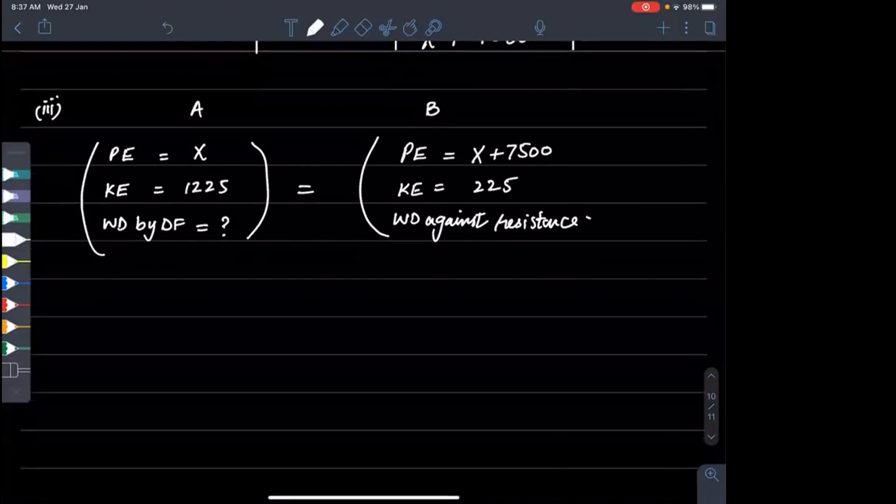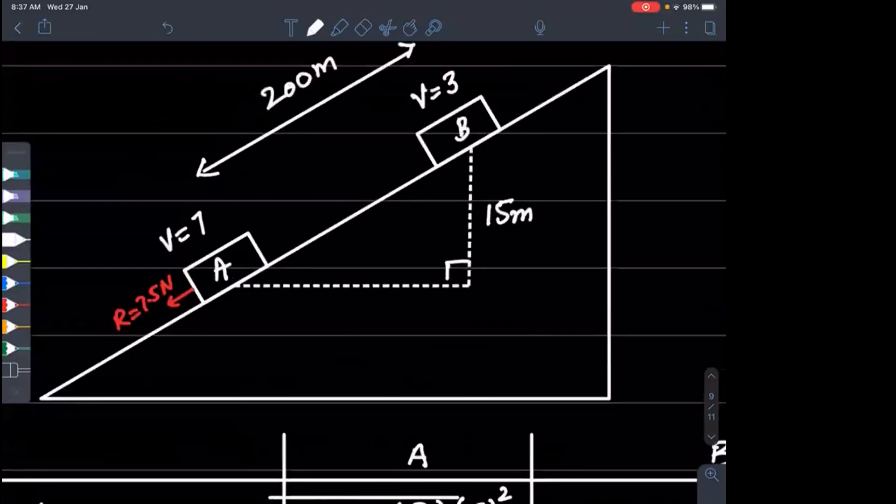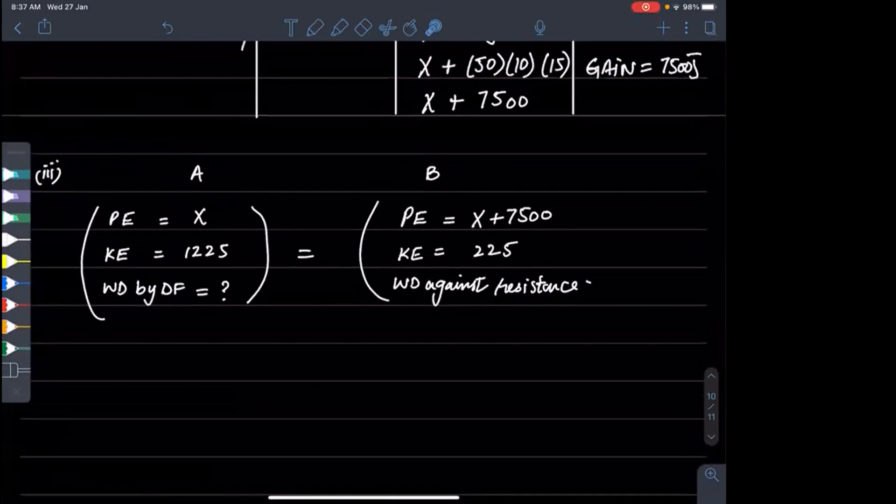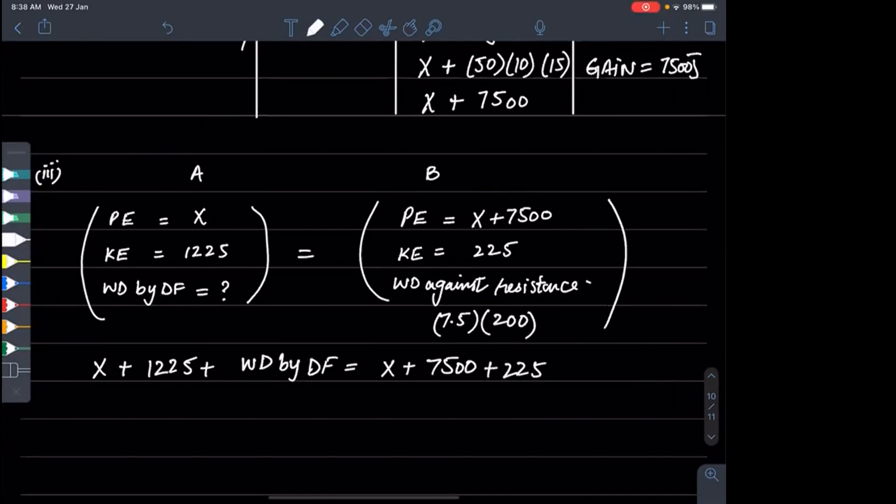Work done against resistance: the resistance force is 7.5, so work done is force times distance, 7.5 times 200. So this is our equation: x plus 1225 plus work done by driving force equals x plus 7500 plus 225 plus 7.5 times 200.